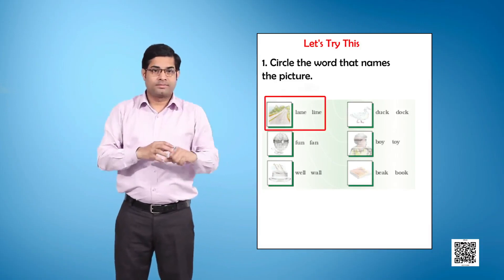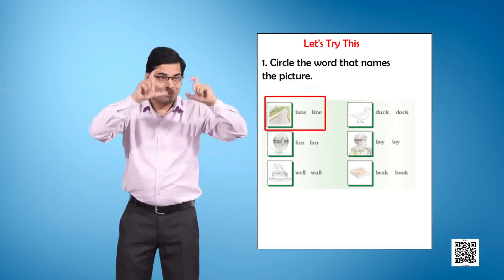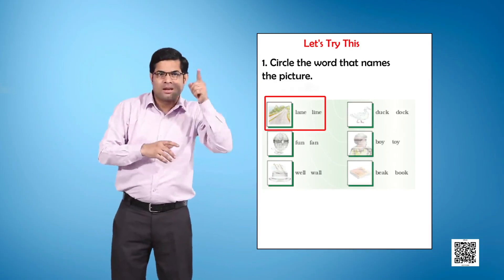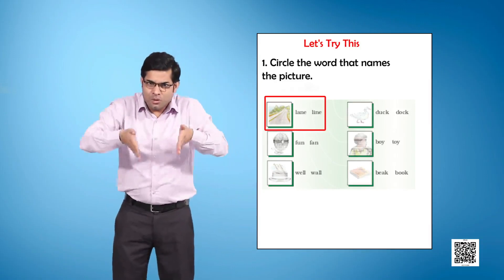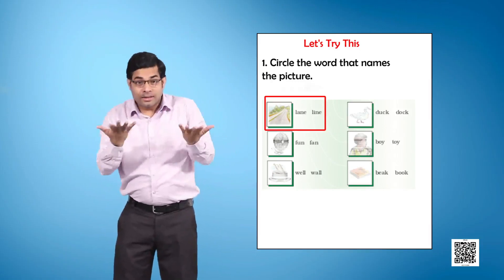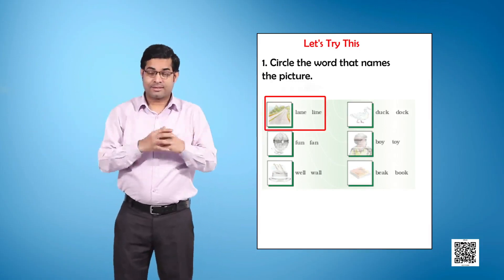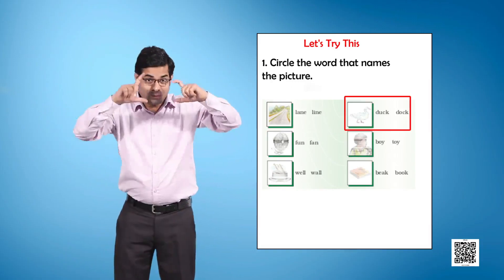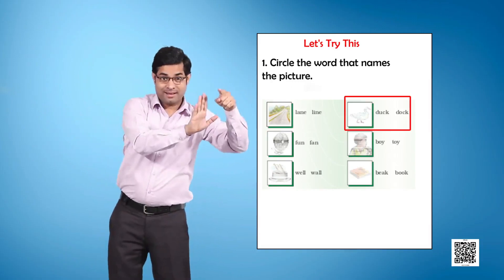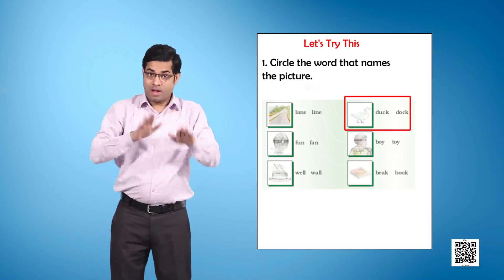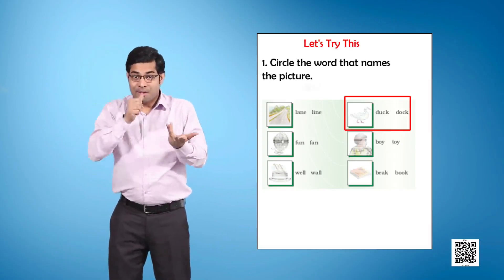First one is a picture of a street. Is it a lane or a line? Then there is a bird. Is it a duck or a dock?